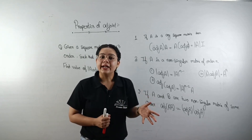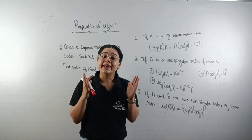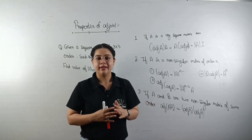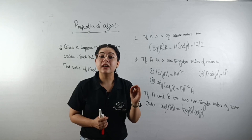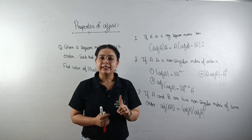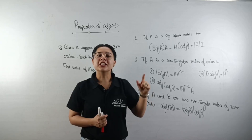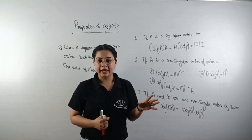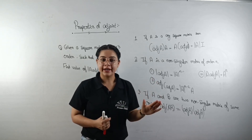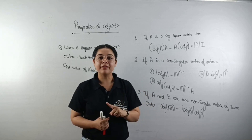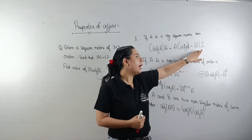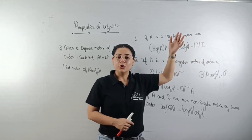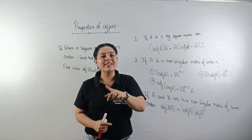So if you are asked in a question to multiply your matrix by its adjoint, you do not need to calculate the adjoint first and then multiply. Instead, we use the identity matrix of the same order as A. If you understand this property, it will be easy to solve such problems.